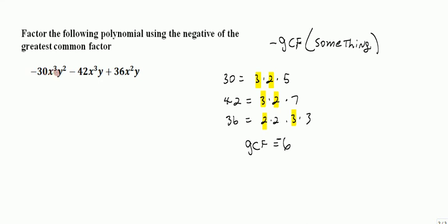The variables, we've got x cubed, x cubed, and x squared. What do they have in common? Well they all have an x squared in common. No more than x squared because this guy only has 2 of them.